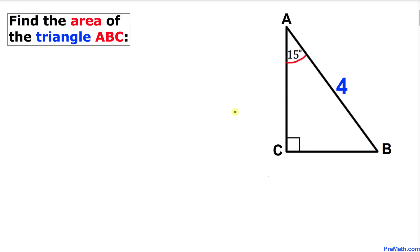Welcome to pre-math. In this tutorial we are going to find the area of a given right triangle ABC, where one of the angles is 15 degrees and the hypotenuse is given as 4 units. Let's go ahead and get started with the solution.